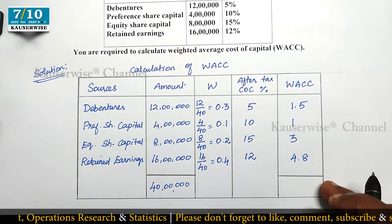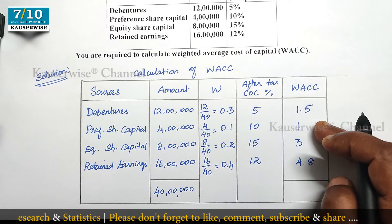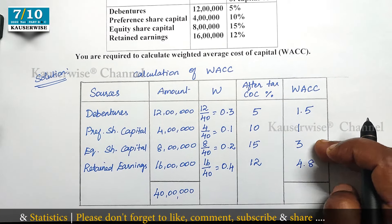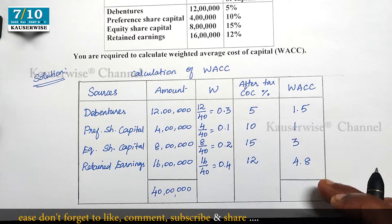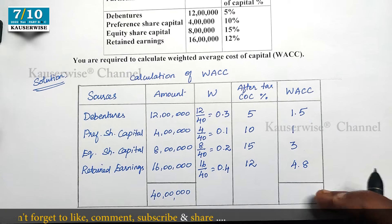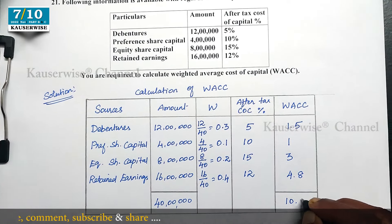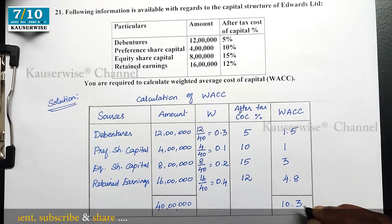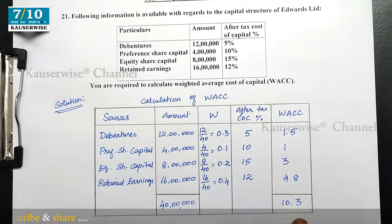Now find out the total: 1.5 + 1 + 3 + 4.8 = 10.3. This is the total Weighted Average Cost of Capital — 10.3%. This is the way to solve this kind of problem.